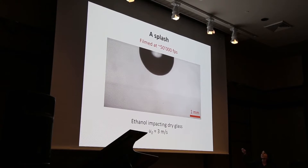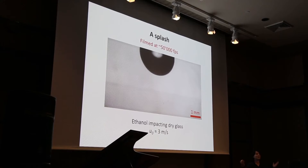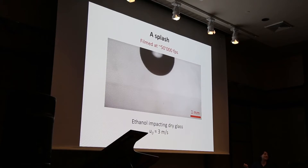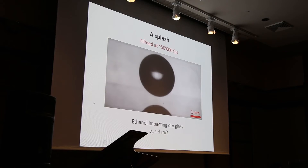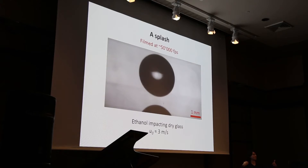In our lab, we can do that because we have HD cameras that allow us to film this droplet impact at about 50,000 frames per second. I'd like to show you a drop of ethanol that is going to impact a glass slide. I stopped the movie here just for a second to point out that this is our drop. You can ignore the bright spot in the middle because it's simply because we backlight the drop — it's an optical artifact. You see down here the reflection of the drop, and in just a second it's going to impact the glass slide right here.